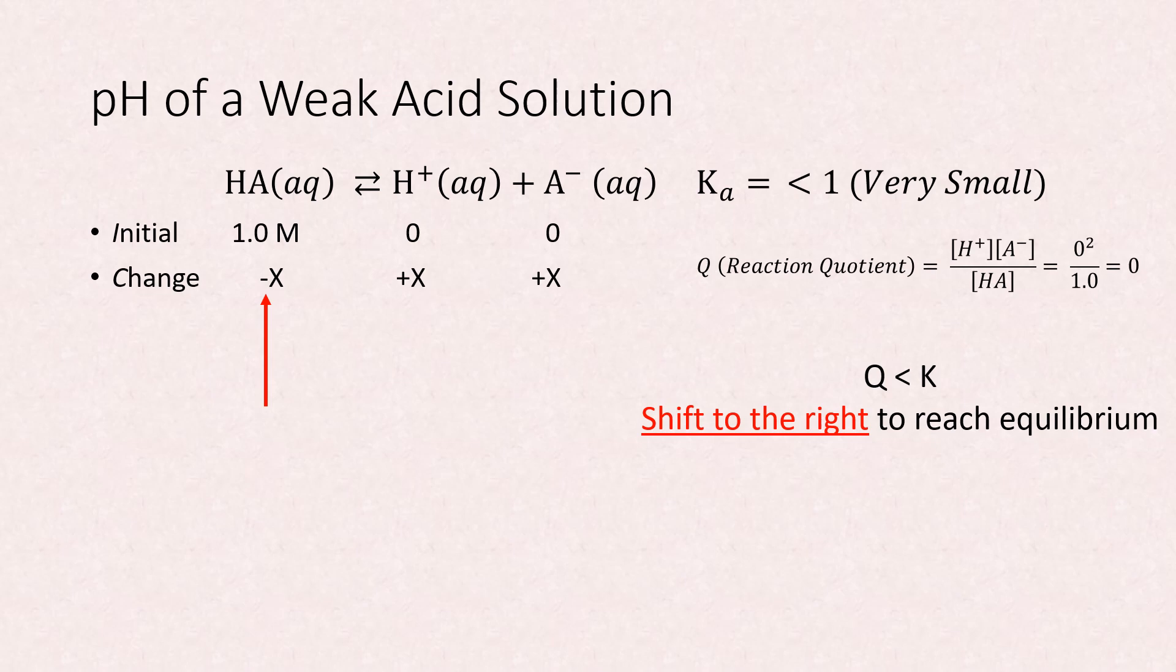The change for H plus and A minus are both plus 1x because a shift to the right means these species are gained. 1x comes from the stoichiometric ratios in the balanced equation.